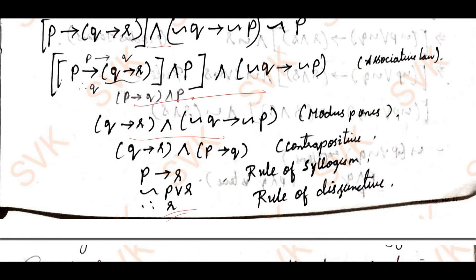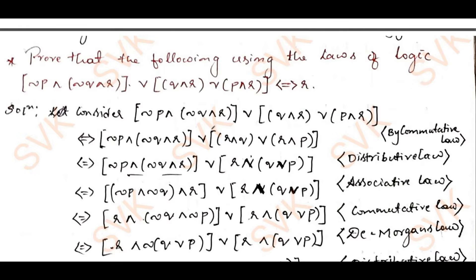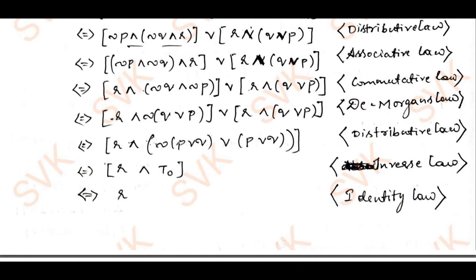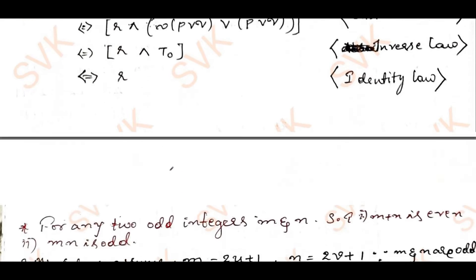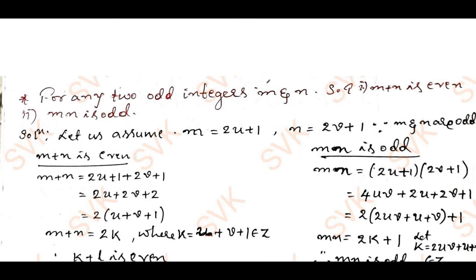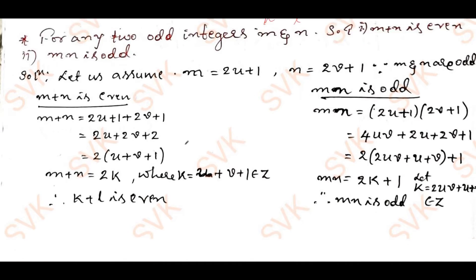The other choice part from Module 1: using laws of logic I need to prove logical equivalence — this I have done in my previous video, you can refer to it. Also in the exam they asked, in place of m and n, for k and l: I need to prove k+l is even and k·l is odd, which I also proved in my previous video.